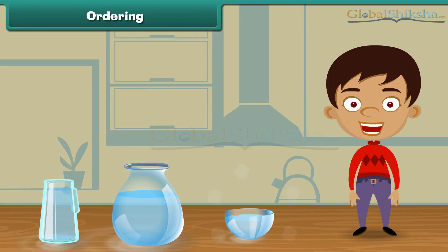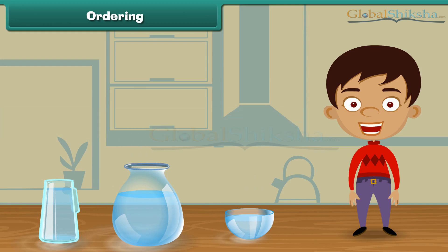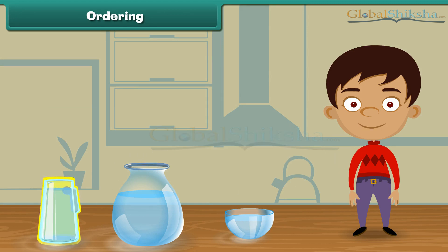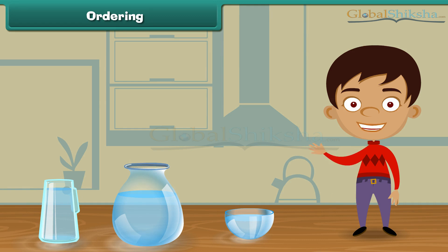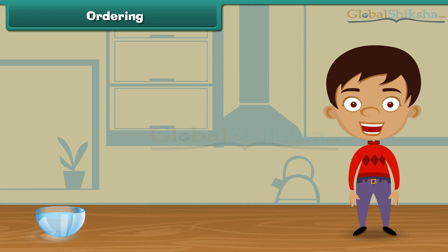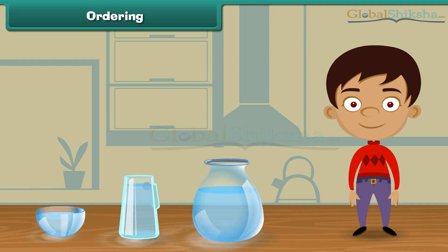Friends, we have three different vessels. Which vessel holds the least water? Yes, you are right. The bowl holds the least water. A jar holds more water than the bowl, and the pot holds more water than the bowl and the jar. Let us now arrange these vessels in increasing order. Bowl comes first because it holds the least water. The next in the row is the jar as it holds more water than the bowl. At last, we place the pot because it holds more water than the bowl and the jar.